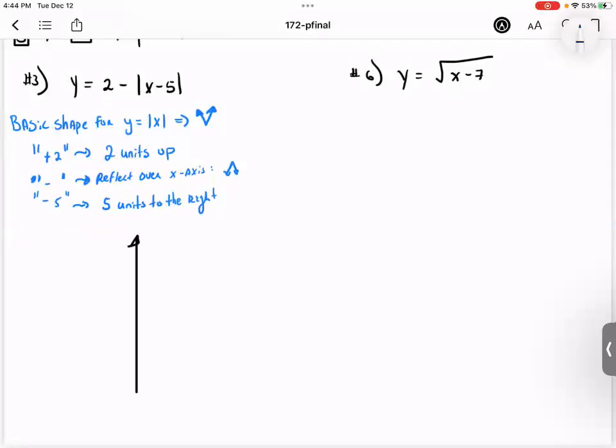Here's the y-axis being drawn, followed by the x-axis. Let's extend it a little bit more. We went, let's say from the origin, I went two units up: one, two. I had to go five units to the right: one, two, three, four, five. I have my vertex point, which is five comma two, and then I just draw the V that goes upside down. And there you go, that would be the graph for number three.